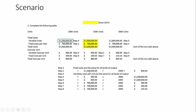We take the $1.5 million of variable costs and divide by the 2,500 units to get $600 as our variable cost per unit. In step 3, the variable cost per unit is the same for all levels of output, so that $600 applies to both the 2,000 units and 3,000 units scenarios. In step 4, we multiply $600 by 2,000 units to get $1.2 million, and $600 times 3,000 units gives us $1.8 million.